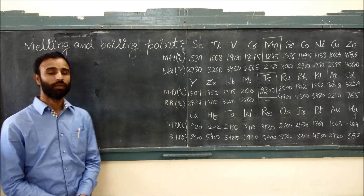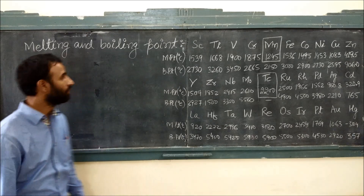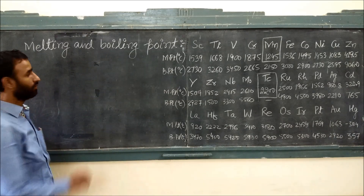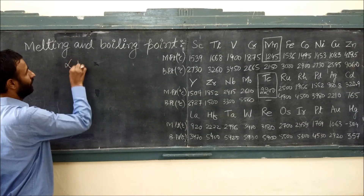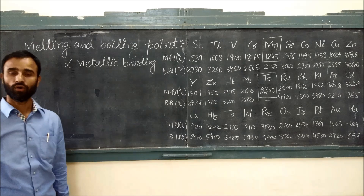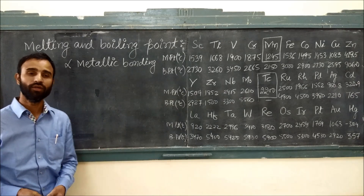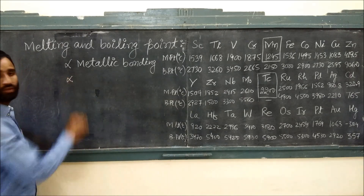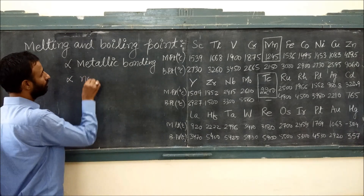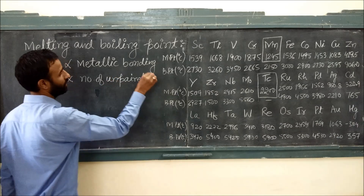Let us talk about melting and boiling point. Melting point and boiling point are both directly proportional to metallic bonding or covalent bonding between metal and metal, which in turn is roughly proportional to the number of unpaired electrons.